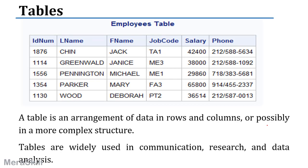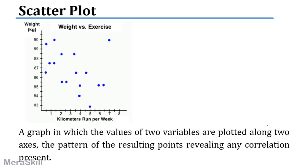A table is a structured arrangement of data — for example, arranging ID number, first name, last name, job code, phone number, and so on. It is just data in a structured file. Tables are used in research, communication, and various other contexts where structured data needs to be presented.